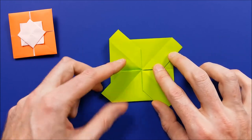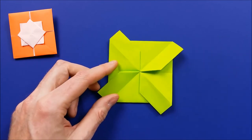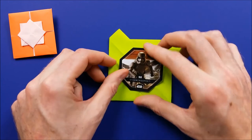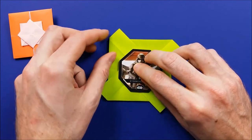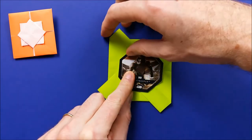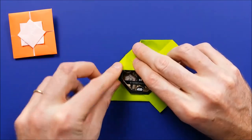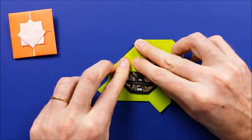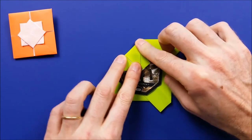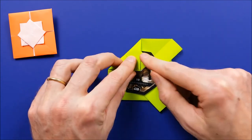And now you can take your card or small gifts. I'm going to put a stormtrooper in there. And we'll fold the corners to the center. Like this.